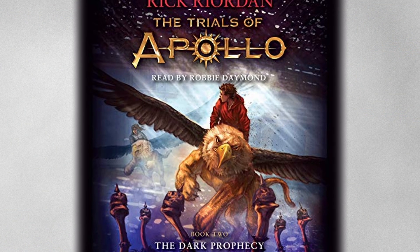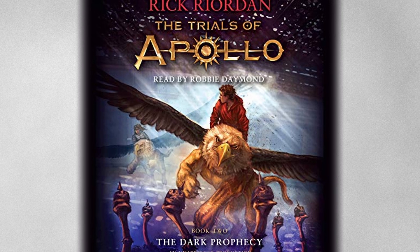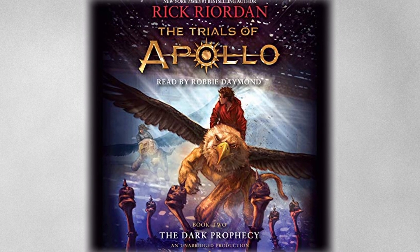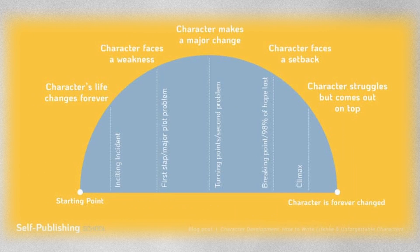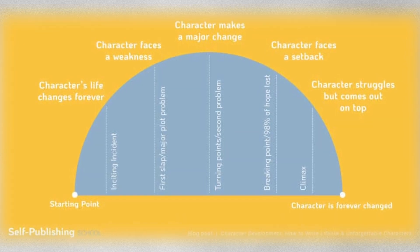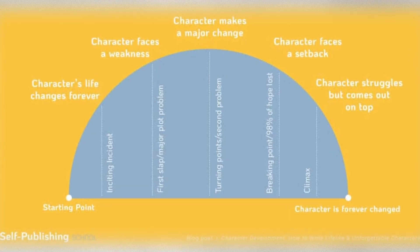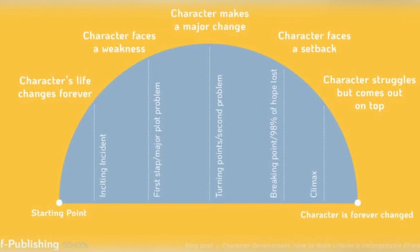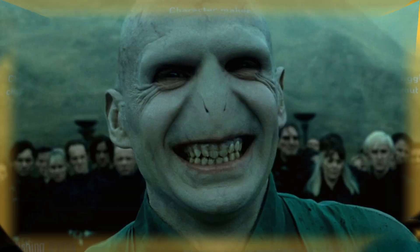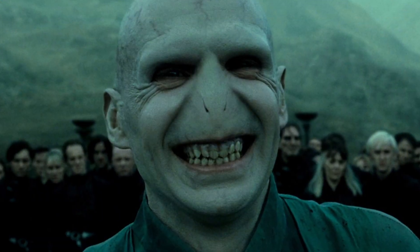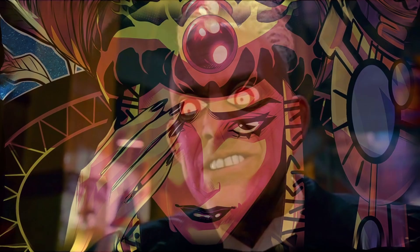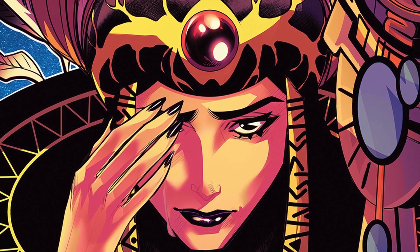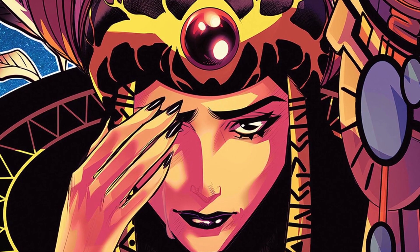I learned the real reason why Rick Riordan's book, The Trials of Apollo: The Dark Prophecy, for me is the worst book he ever wrote. I learned how to develop convincing yet surprising characters and how to give them meaningful story arcs. I even realized what truly makes villains like Lord Voldemort, Judge Doom, and the comic version of Rita Repulsa so compelling and amazing.